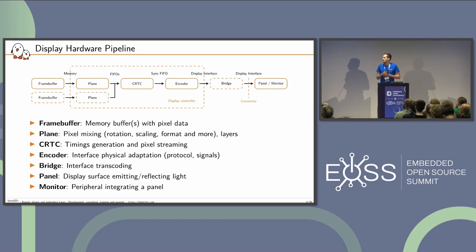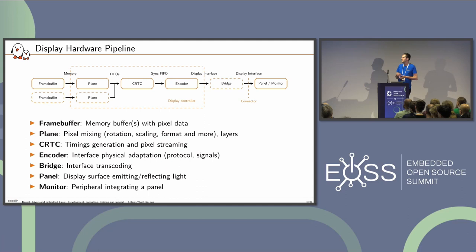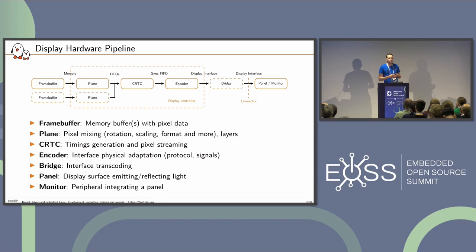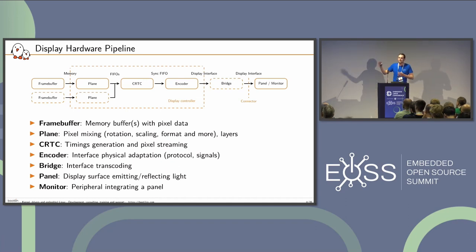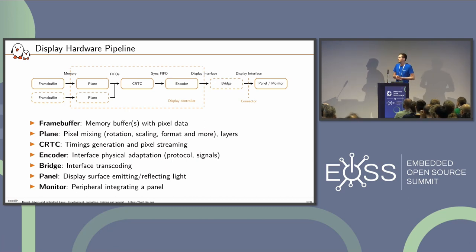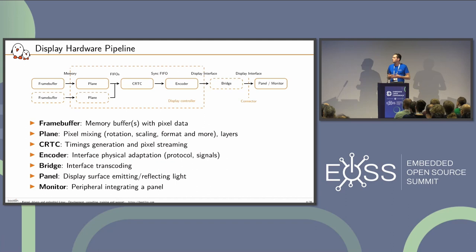After the plane, we have something called the CRTC, which comes from 'cathode ray tube controller' — obviously legacy wording, but we still use it to talk about the parts of the display controller that generate timings. Display works with specific timings, meaning pixels must be sent in a specific order and at a specific rate. The CRTC grabs pixels from memory and streams them at the right rate.